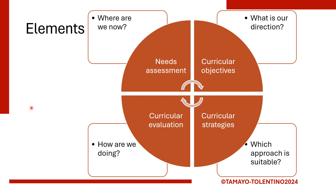These are the four elements of a curriculum: needs assessment, curricular objectives, curricular strategies, and curricular evaluation. Each of these elements answers a directional question that helps us plan a curriculum, and these also correspond to the steps in the curriculum planning process.